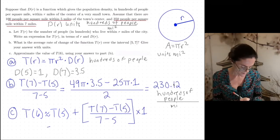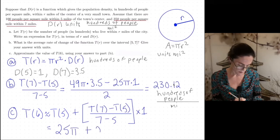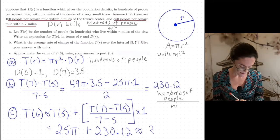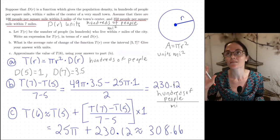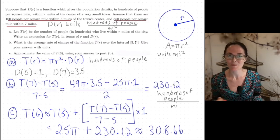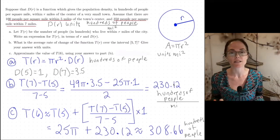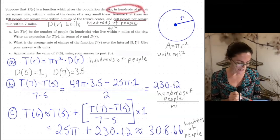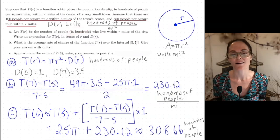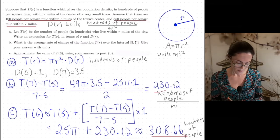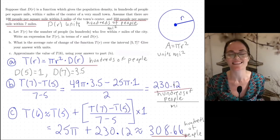So let's do that now. T(5) is 25π. And then we add this to 230.12. Again, this is a calculator calculation. It's about 308.66. And this is in hundreds. So if I wanted the number of people, I would just move the decimal place over, but this is in hundreds of people. I just left it in hundreds because from the beginning, D(r) and T(r), they are in hundreds of people. So this is number one. And now let's move on to the next example.